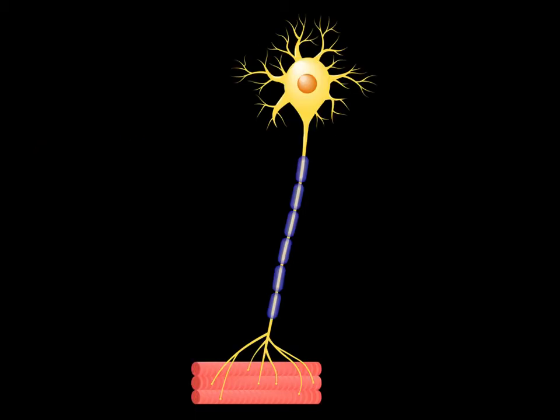So we've got a muscle fibre at the bottom and a motor neuron. Together — motor neuron and muscle fibre on your screen — you now have a motor unit. Don't forget, those two together make the motor unit.